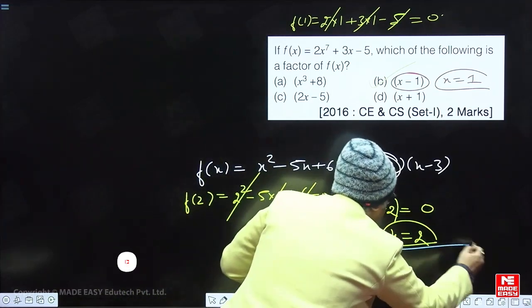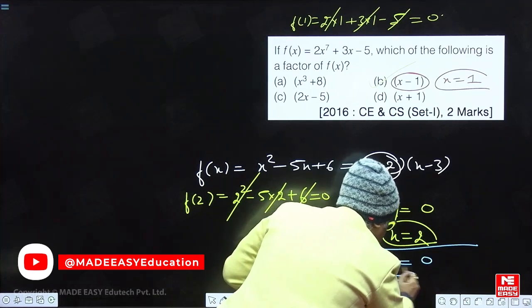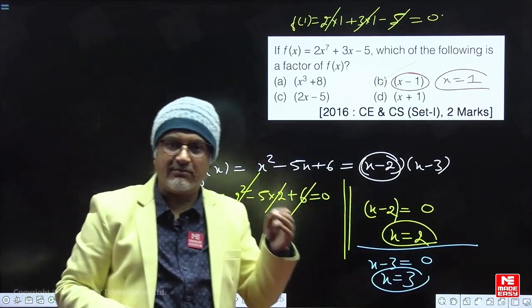In the same way, what we can see, x minus 3 is a factor of the equation. On putting x equal to 3, the equation should vanish. The equation should become 0.